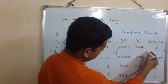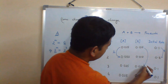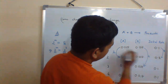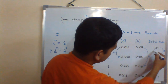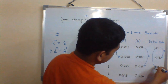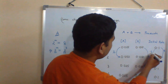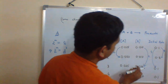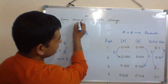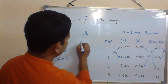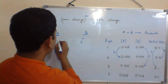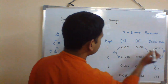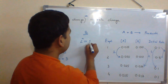And for B reactant, we can see that from here to here there is a change in concentration by 2 times, and the corresponding change in rate is 1 time — meaning it is basically the same, 0. So for B, concentration changes 2 times, 2 power M, and the rate change is 1 time.